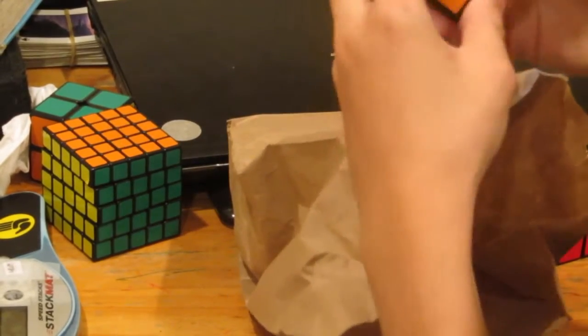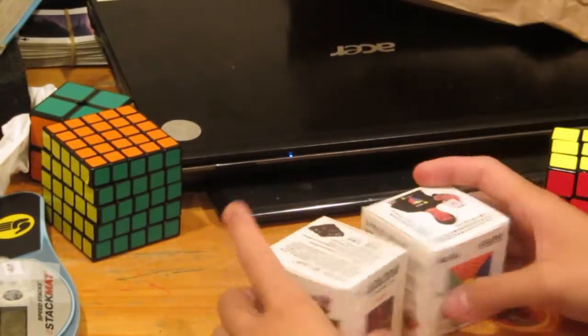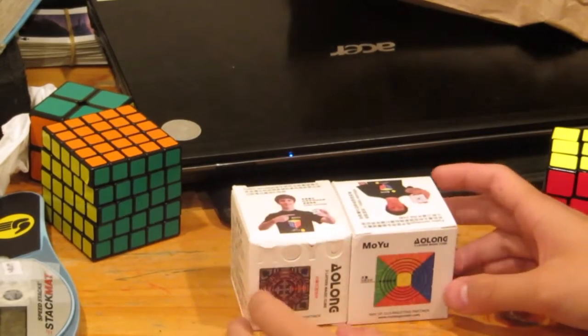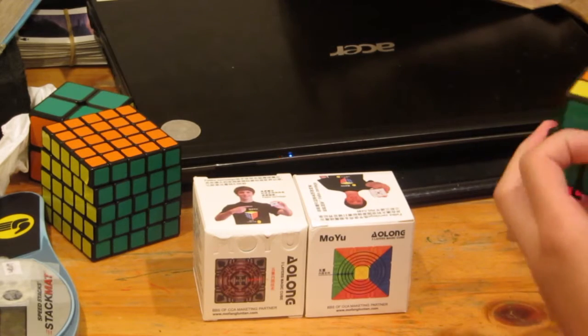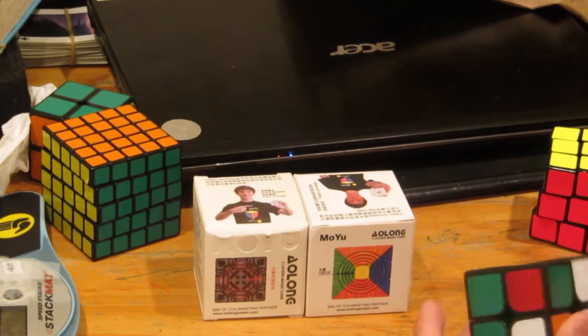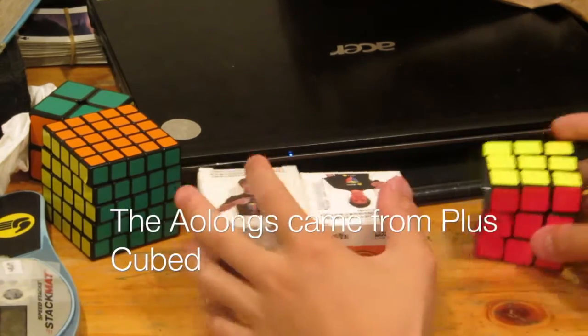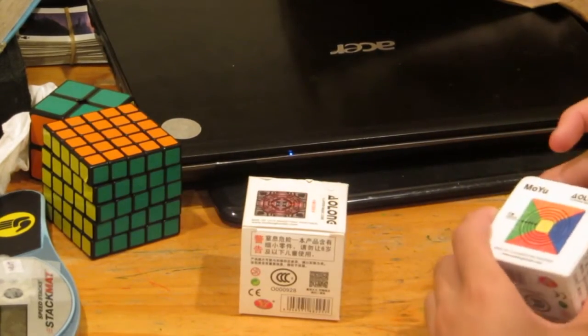Wow, I understand why I was sent the Dayan 2x2. I have the mini Aolong and the Moyu Aolong. I know why I got the Dayan, because you didn't want it. So which one should I open first? Let me open the standard Aolong.